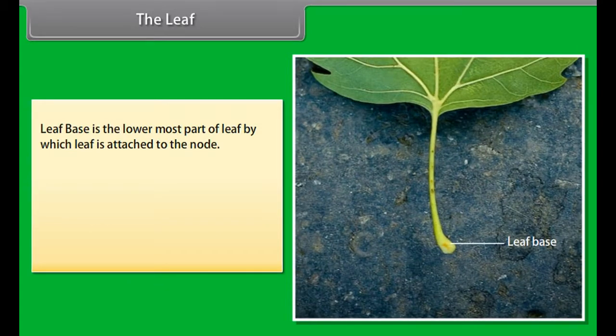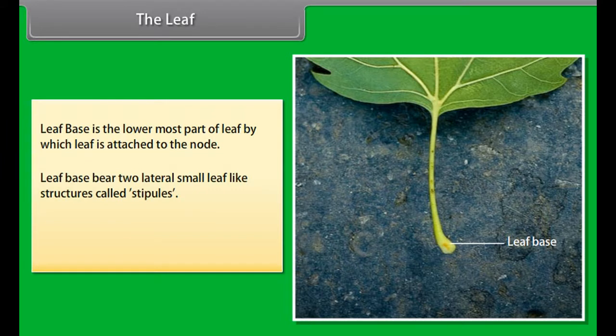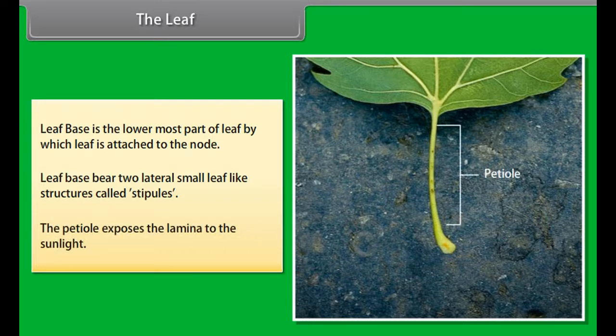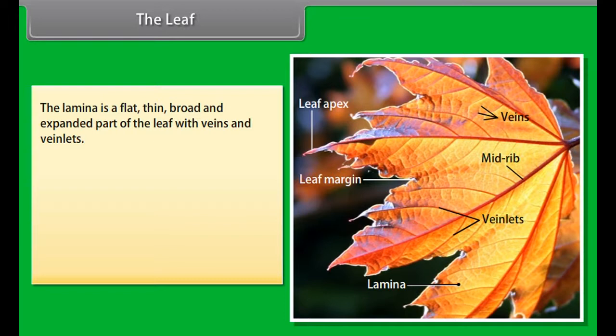Leaf base is the lowermost part of the leaf, by which the leaf is attached to the node. Leaf base bears two lateral small leaf-like structures called stipules.